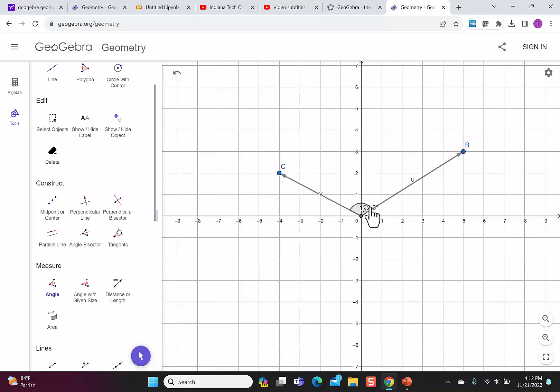When I do that, it'll give me the measure of the angle. And you can click and drag the numbers around. Sometimes it might take more than one click to make sure you're clicking on the right thing, but you can move the angle so you can see it.